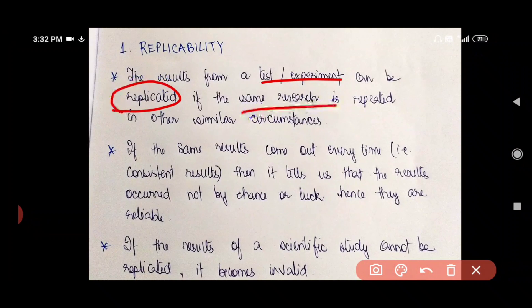If the same research is repeated in other similar circumstances, did I make myself clear? If the same results come out every time, that is they show consistent results, then it tells us something. It tells us that the results occurred not by chance or by luck. So they are very reliable.